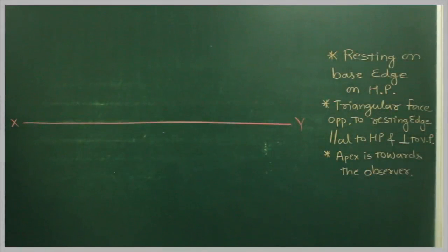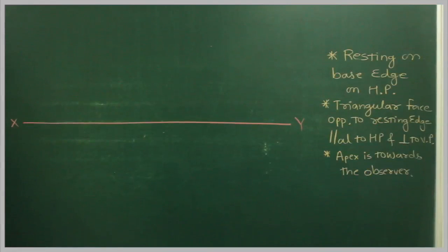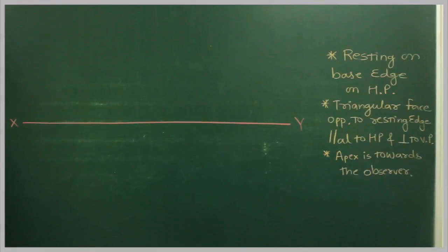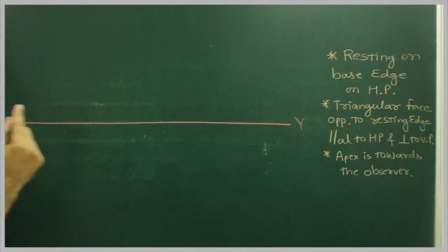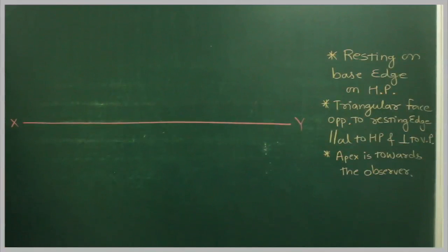In this problem, a square pyramid is resting on one of its base edges of HP. The triangular face opposite to the resting edge is parallel to HP and perpendicular to VP, and the apex is towards the observer. First, we note that it is resting on its base edge of HP.